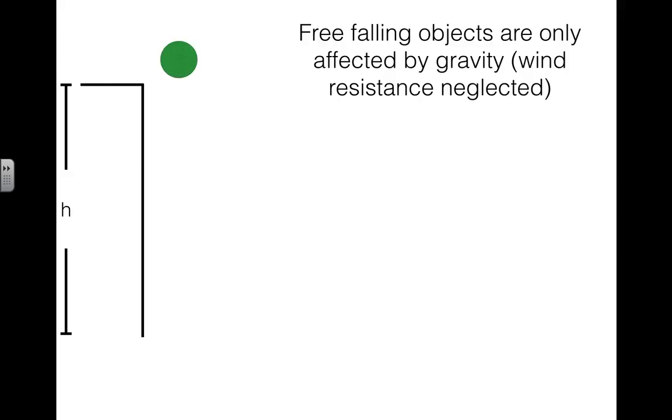This experiment we're just dropping a ball from a roof of a building which has its height as H you see on the left hand side. We just drop the ball and it falls down freely and this is called free fall. In this experiment we're going to neglect any wind resistance.